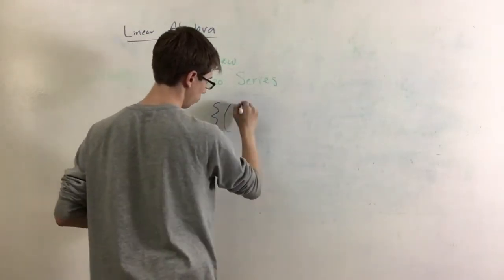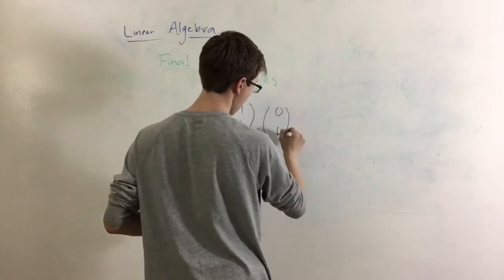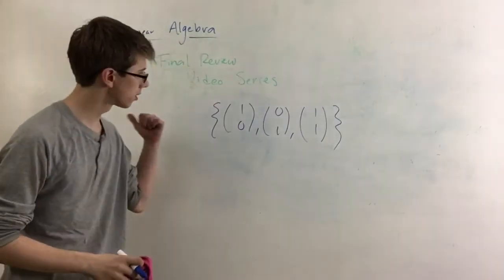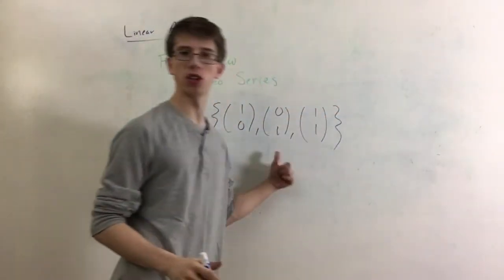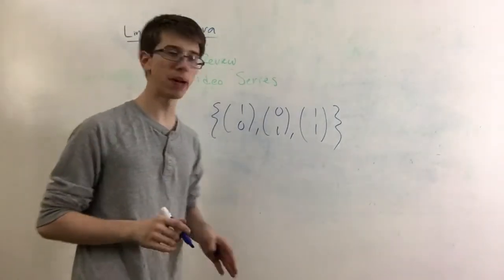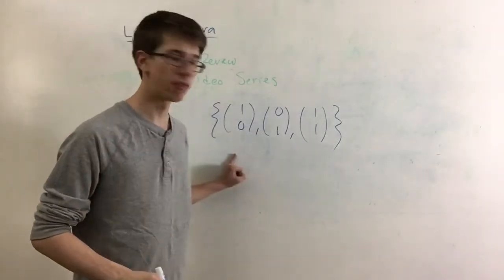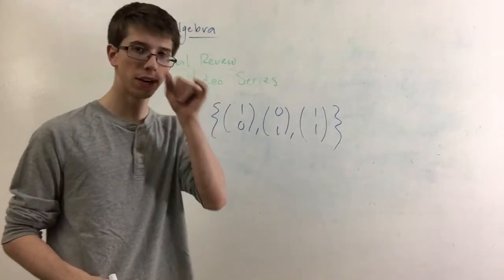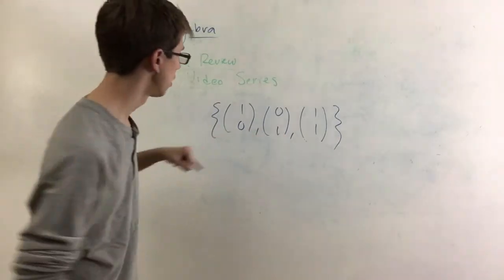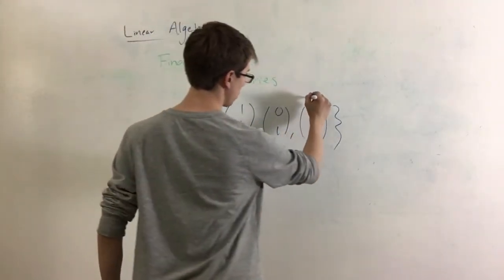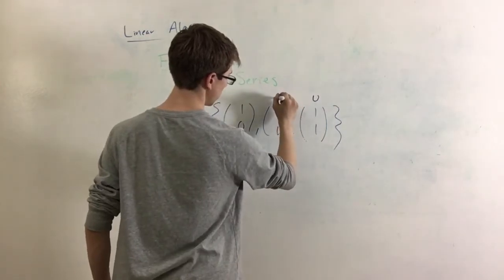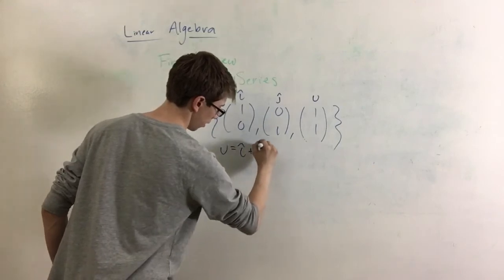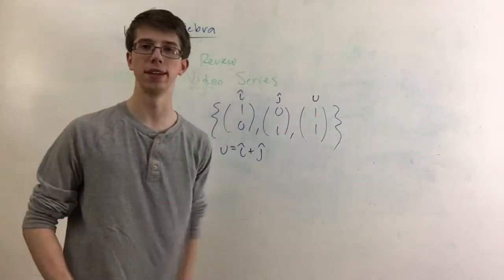If I also have [1, 0], [0, 1], and [1, 1], then this is a linearly dependent set and it spans R-squared. Although it spans R-squared, it's linearly dependent because we have three vectors in our set — but it doesn't span R to the third, it only spans R-squared. Why? Because vector u — which is [1, 1] — is just i-hat plus j-hat. That's a linear combination, and therefore the set is linearly dependent.